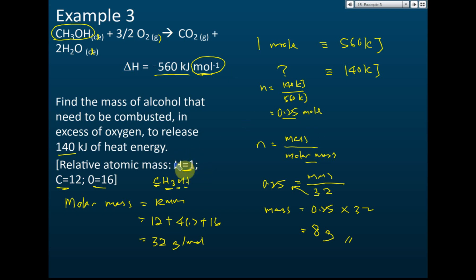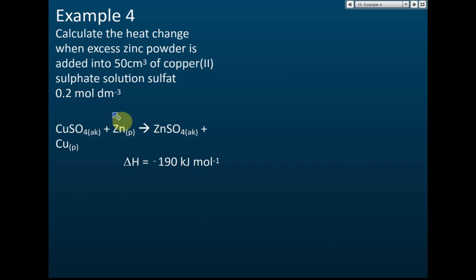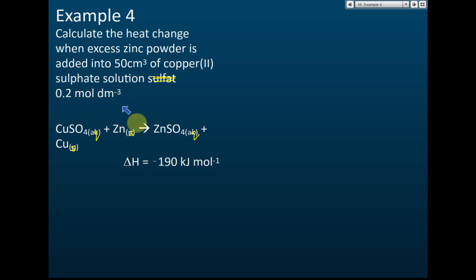The relative atomic mass of hydrogen is 1, and since CH₃OH has four hydrogens, it's 4 × 1. Now for the next example — heat of displacement — zinc is used to displace copper. The equation shows zinc (solid) reacting with copper sulfate (aqueous) to give zinc sulfate (aqueous) and copper (solid). The question asks to calculate the heat change when excess zinc is added to 50 cm³ of 0.2 mol/dm³ copper sulfate solution, given ΔH = −190 kJ/mol.